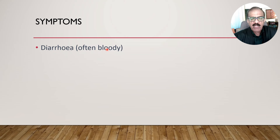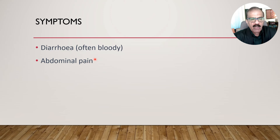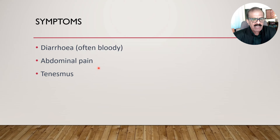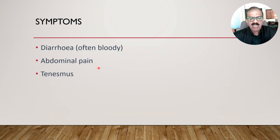Abdominal pain may be in the form of colics or cramps in the whole abdomen or lower abdomen, or it may be persistent pain depending on the pathology. There is also a kind of rectal discomfort — after defecation, if someone feels that there is still stool in the rectum and some discomfort after passing stool, that is called tenesmus, which indicates inflammation of the distal colon.